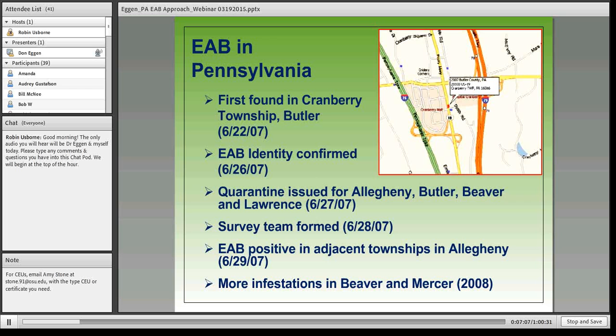Emerald ash borer was originally discovered in western Pennsylvania in 2007, just north of Pittsburgh where the Pennsylvania Turnpike and I-79 come together. Two USDA APHIS inspectors had just been across the border into Ohio and stopped the first rest stop on the Ohio Turnpike. On their way back they stopped for lunch, one went to an ATM machine, and an emerald ash borer landed on him. That's how we discovered emerald ash borer in Pennsylvania.